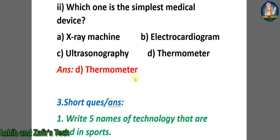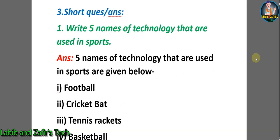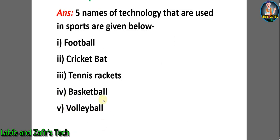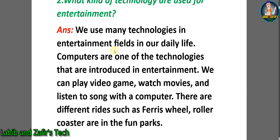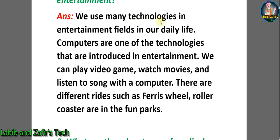Now let's go through some short question answers. Number one: write five names of technology that are used in sports. Answer: five names of technology used in sports are — number one: football, number two: cricket bat, number three: tennis rackets, number four: basketball, number five: volleyball.